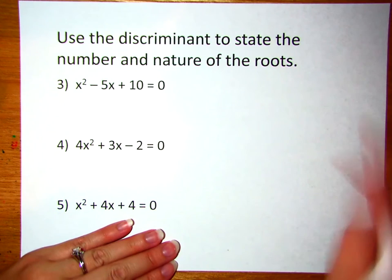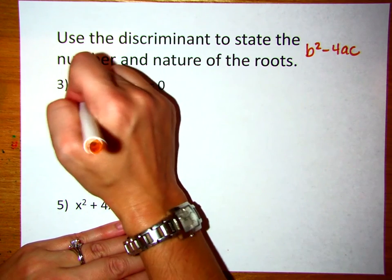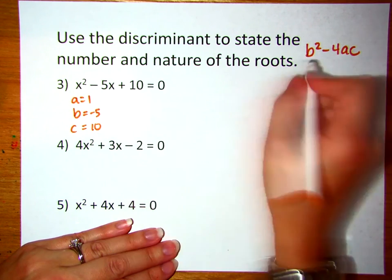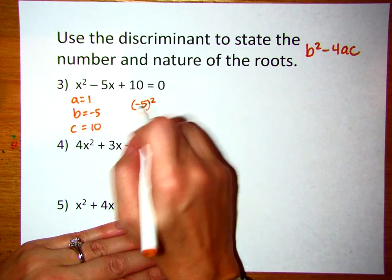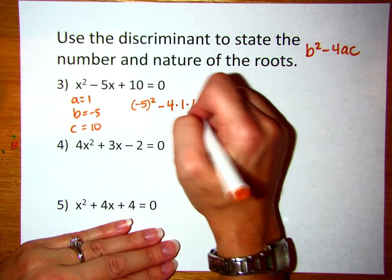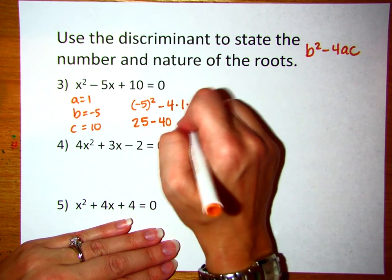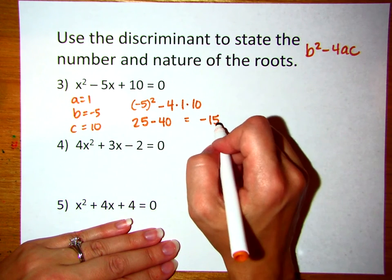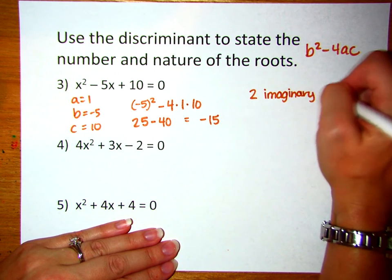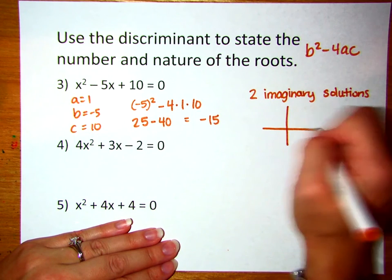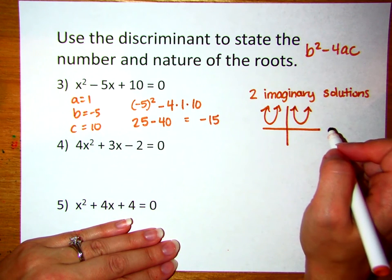Now in terms of the discriminant, the discriminant is b squared minus 4ac. In this problem, a is 1, b is negative 5, and c is 10. Plugging into the discriminant: negative 5 squared — that's negative 5 times itself, which is positive — minus 4 times 1 times 10. So 25 minus 40 gives a discriminant of negative 15. If you get a negative answer for your discriminant, you will have two imaginary solutions. That means on the graph the parabola is above the x-axis and never crosses it, so we have two complex solutions.